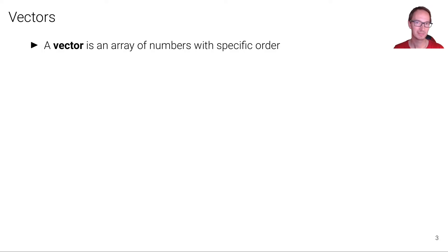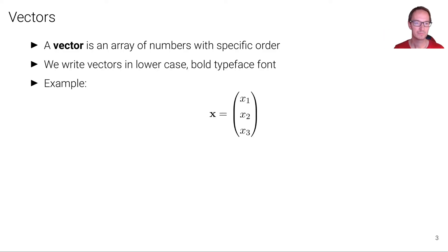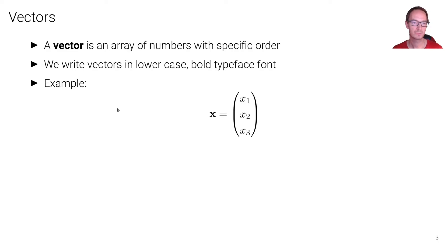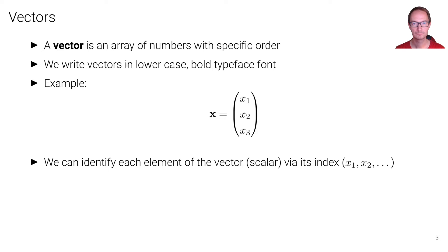A vector, in contrast, is an array of numbers with a specific order of the elements inside that array. We write vectors in lowercase bold typeface font. For example, bold x here is a three-dimensional vector with three scalar entries X1, X2, and X3. We can identify each element of the vector — which is a scalar — via its index: one, two, or three. If each Xᵢ is an element of the real numbers, then the vector itself is an element of R³, the Cartesian product of R, R, and R.